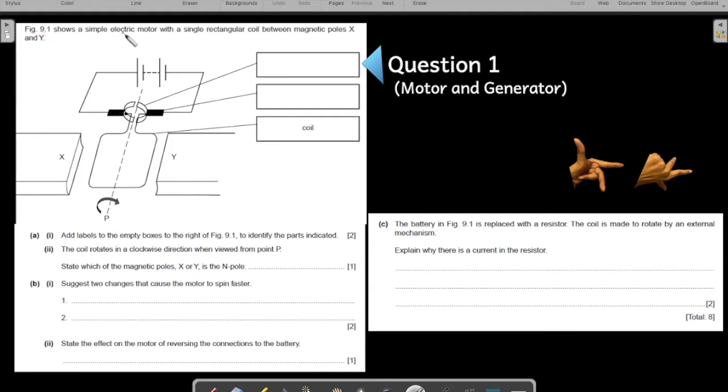The figure here shows a simple electric motor with a single rectangular coil between the magnetic poles x and y. You have the picture of an electric motor here. This question is on motors and furthermore as we proceed, the question extends into talking about generators as well.